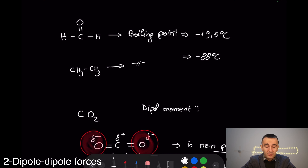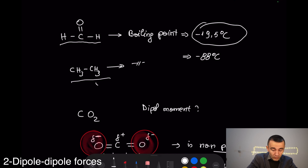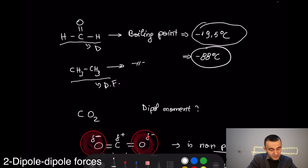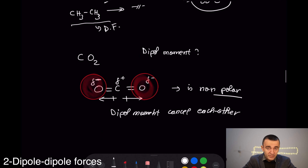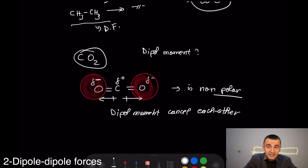Compounds with dipole-dipole forces have higher boiling and melting points. Comparing formaldehyde and ethane: formaldehyde has a boiling point of −19°C while ethane, which contains only dispersion forces, is −88°C. Formaldehyde has both dispersion forces and dipole-dipole forces. Note that carbon dioxide, although it contains polar bonds, is non-polar overall because its dipole moments cancel each other.